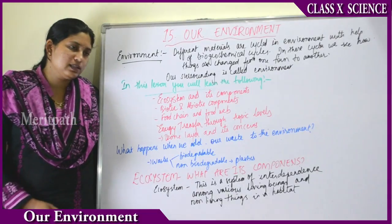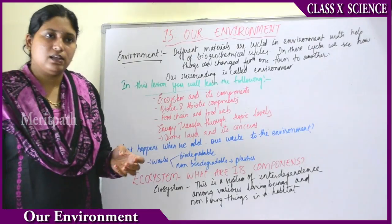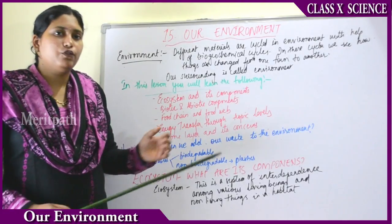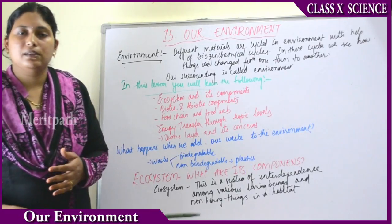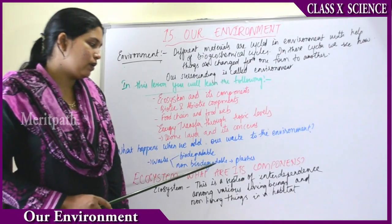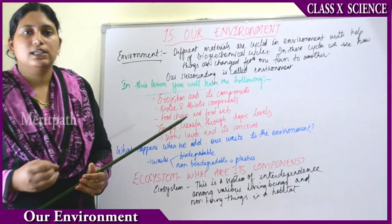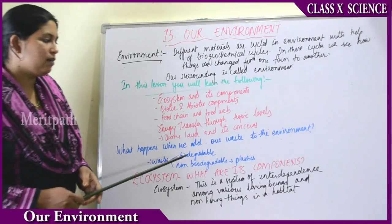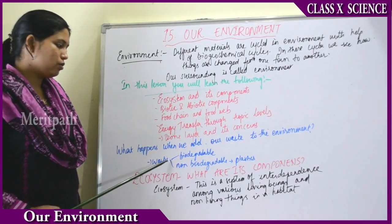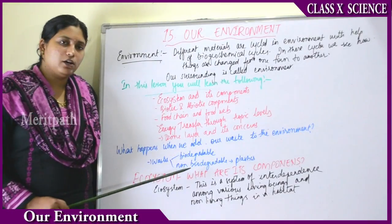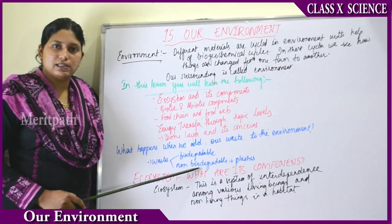What happens to non-biodegradable substances like plastics and polythenes? They get influenced by temperatures but will not get mixed up in the environment. They will not decompose and degrade — they will stay like that for millions of years. So waste is made up of both biodegradable substances and non-biodegradable substances.